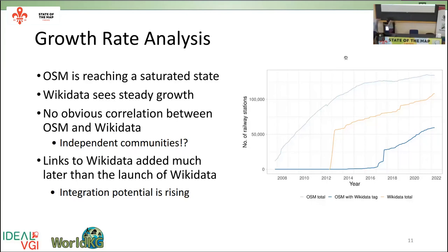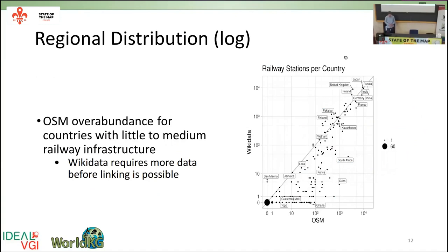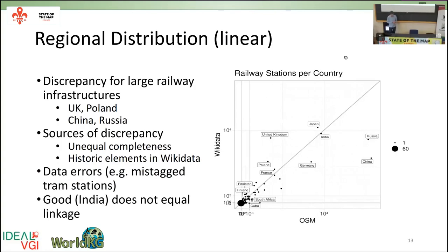The next part is presented by Moritz. We also looked into the regional distribution of the data — not just a global view but also by region. We can see that countries with a high amount of railway stations generally have a high amount in both sources, whereas smaller or medium-sized railway station networks are mostly underrepresented in Wikidata. But be careful — this is on a log scale; at a linear scale you can see high discrepancies between the two datasets even for large railway networks like Russia, China, and the UK.